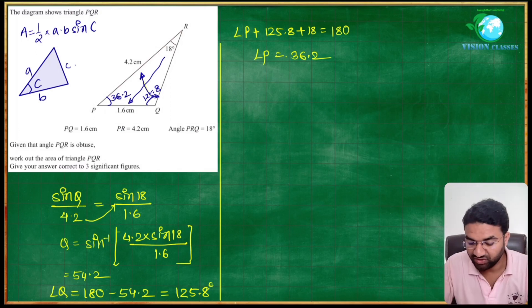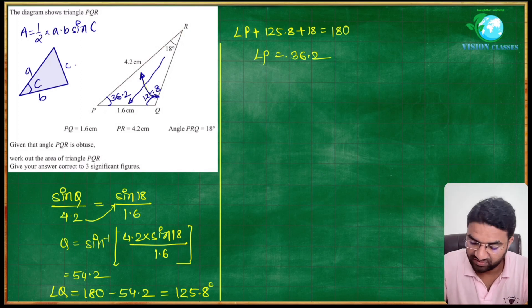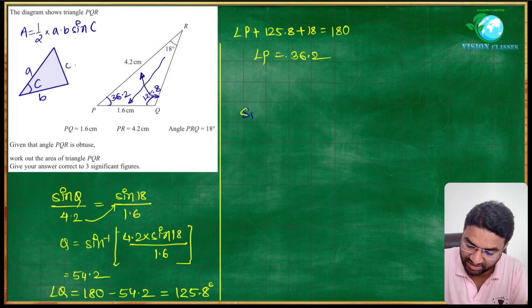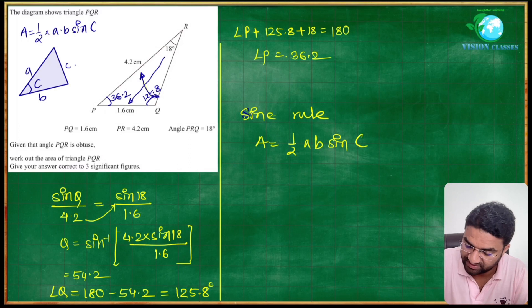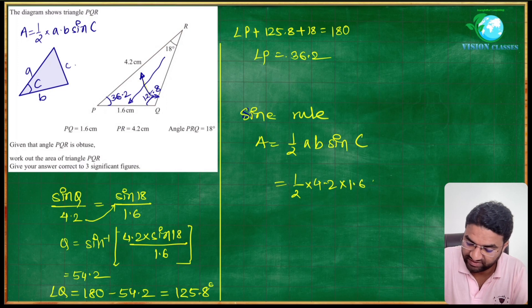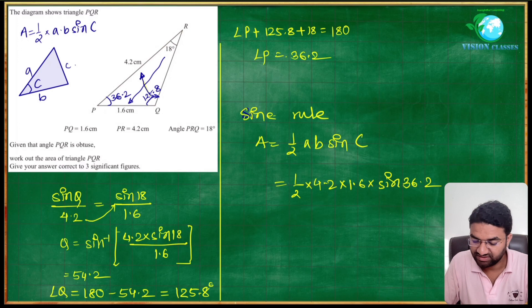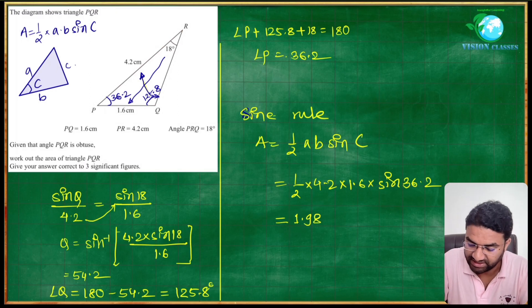Now you got angle P as 36.2, so you can use the area of triangle using sine rule. Area equals one half times a times b times sine of C. So one half times 4.2 times 1.6 times sine of 36.2. If you calculate using calculator, you will get around 1.98 square centimeters as the answer.